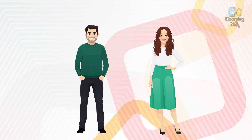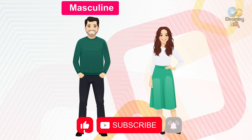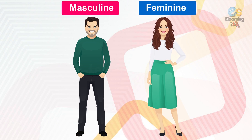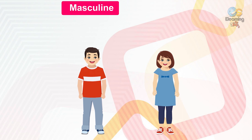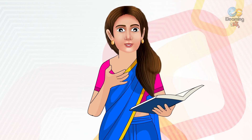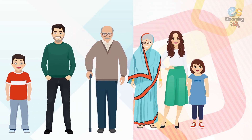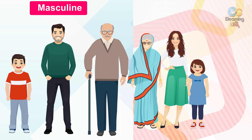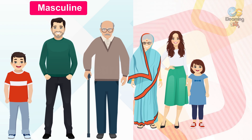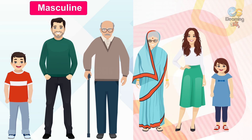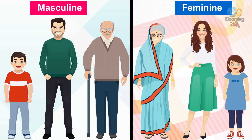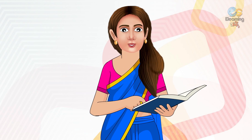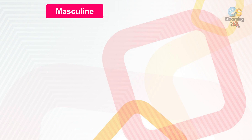Father is masculine, mother is feminine. Son is masculine, daughter is feminine. There are three masculines: grandfather, father, and son. There are three feminines: grandmother, mother, and daughter.